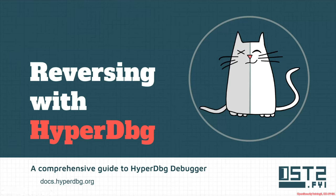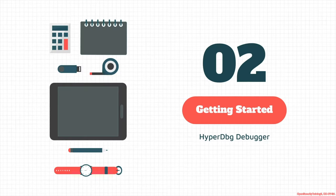Hi everyone. Welcome to the next part of the tutorial reversing with HyperDbg. In the previous part, we saw what exactly this debugger is and we compared it with other debuggers like WinDbg. In this part, we're going to see the basic concepts about this debugger and the concepts that you need to know before you start using it. After that, we start attaching to HyperDbg to debug a system.